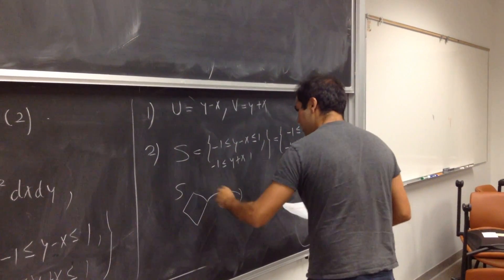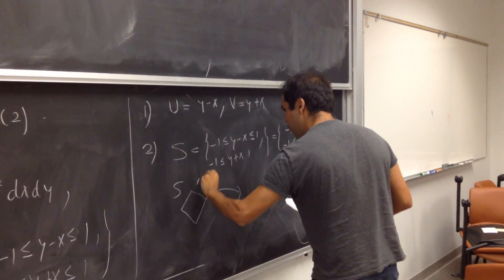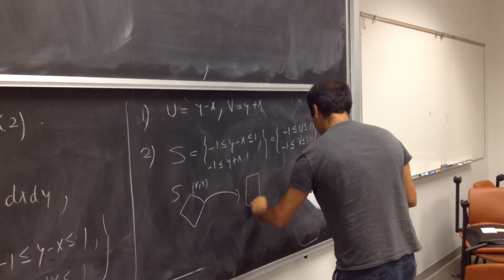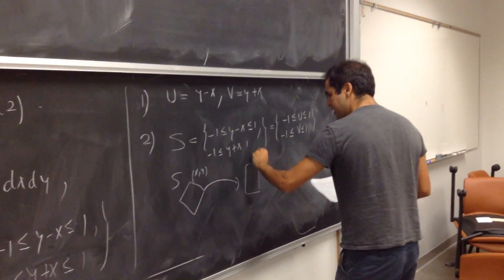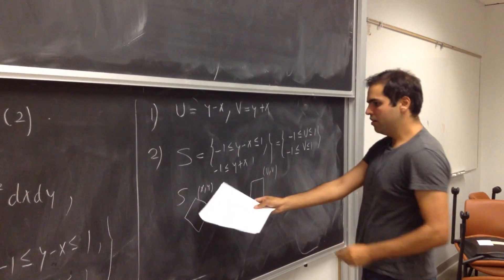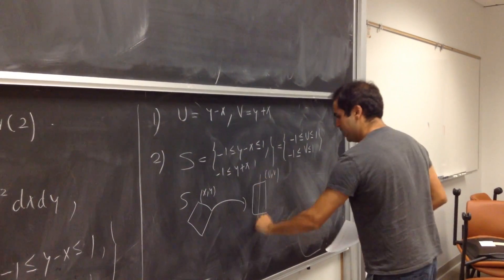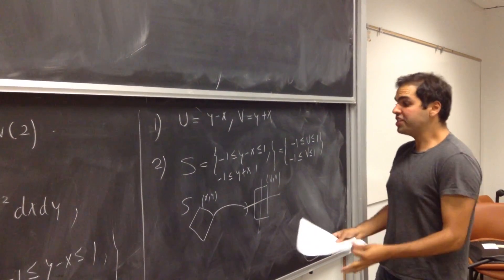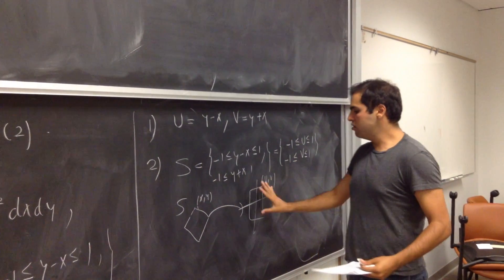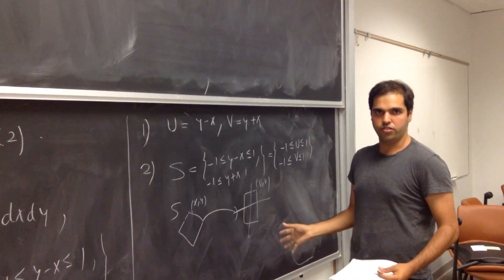So, you really have this picture. This is s, and then when you apply, this is in x comma y variables, and in those variables, u and v, s will become actually a square. Which is good news, because this is hard to deal with, but this is much easier to deal with.